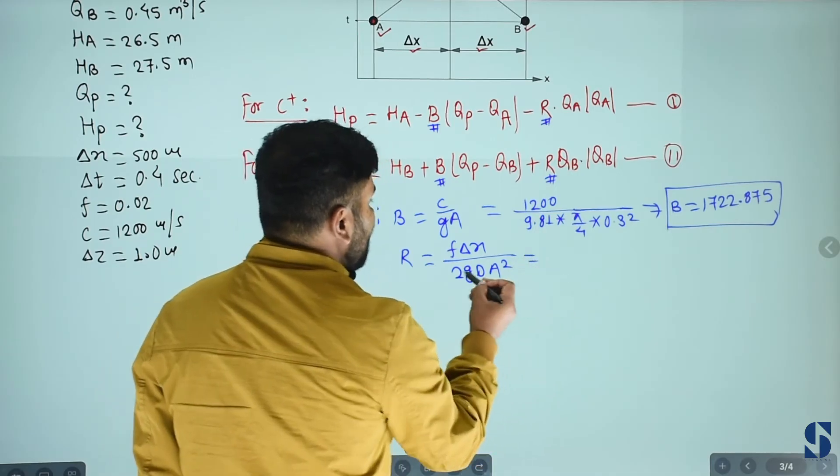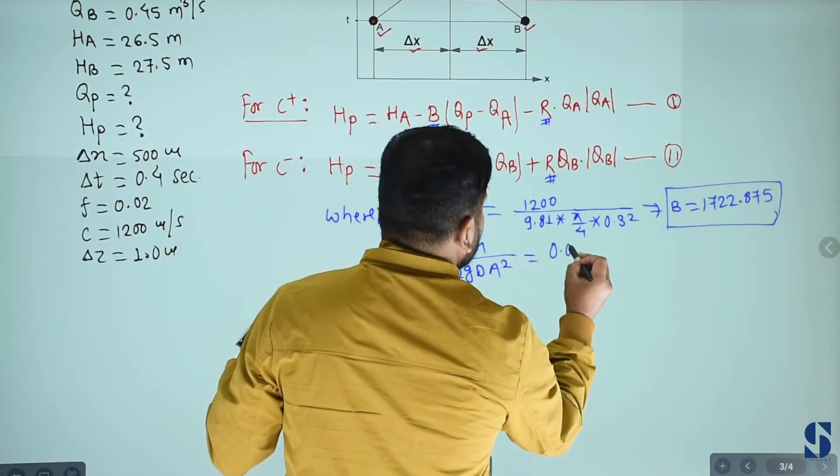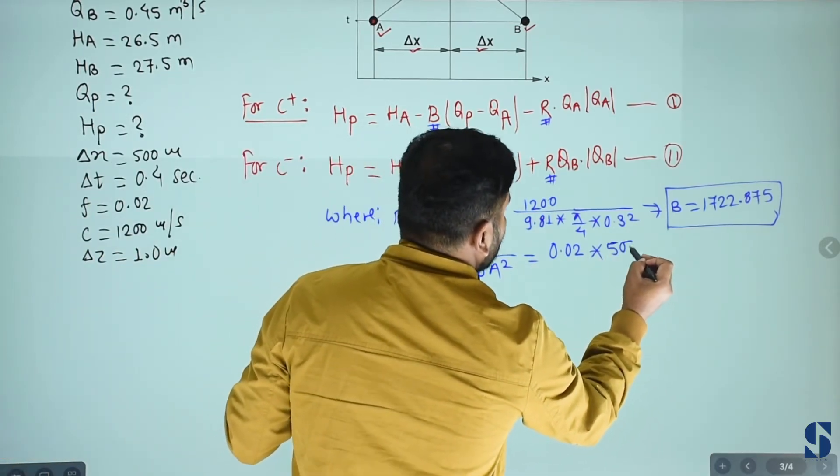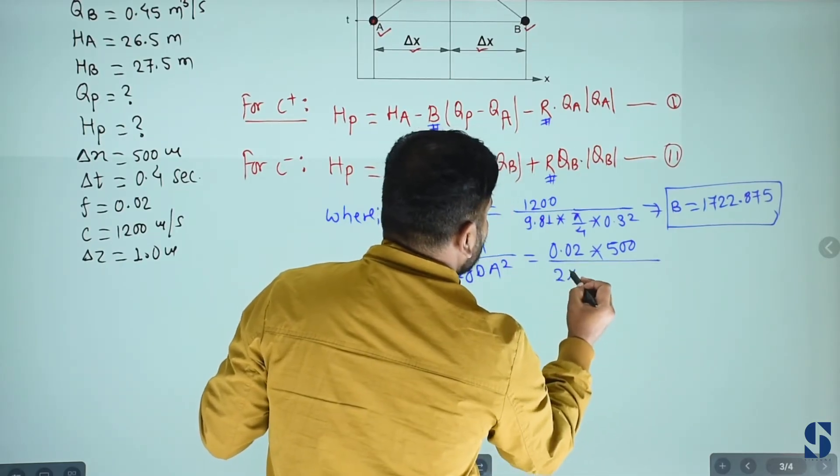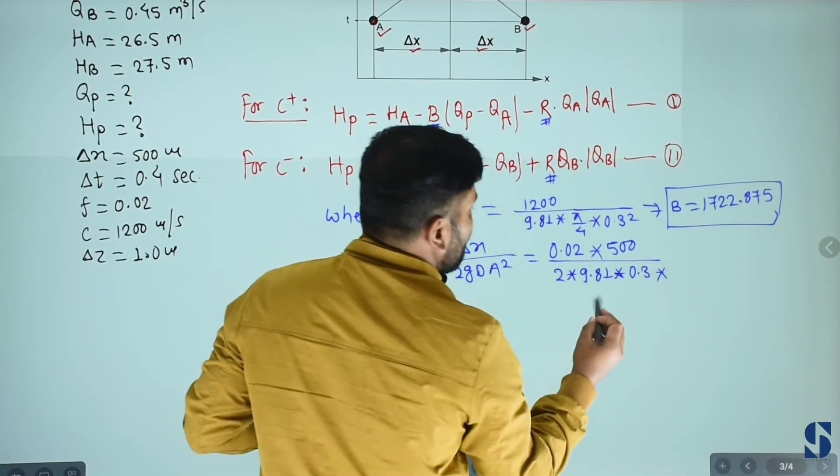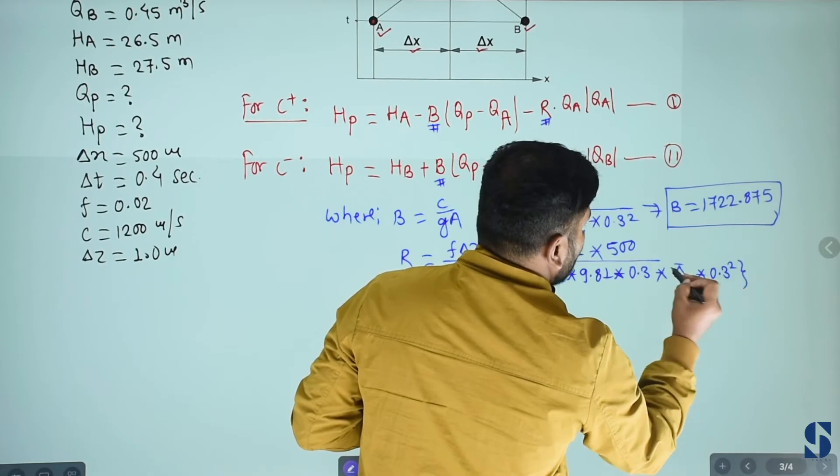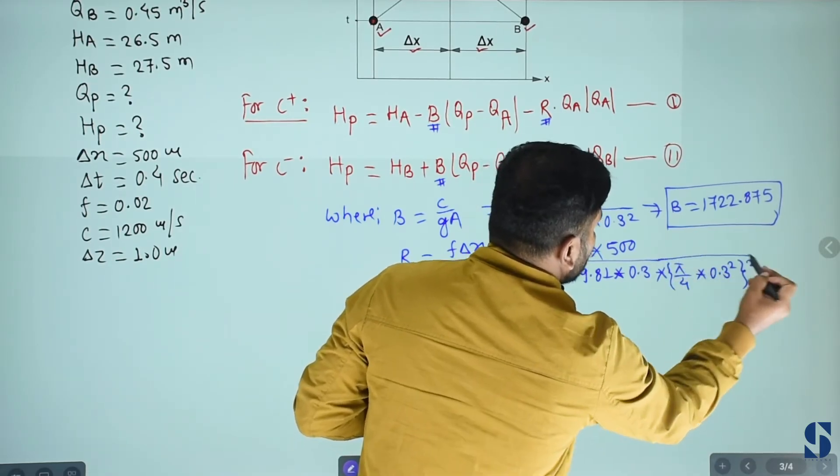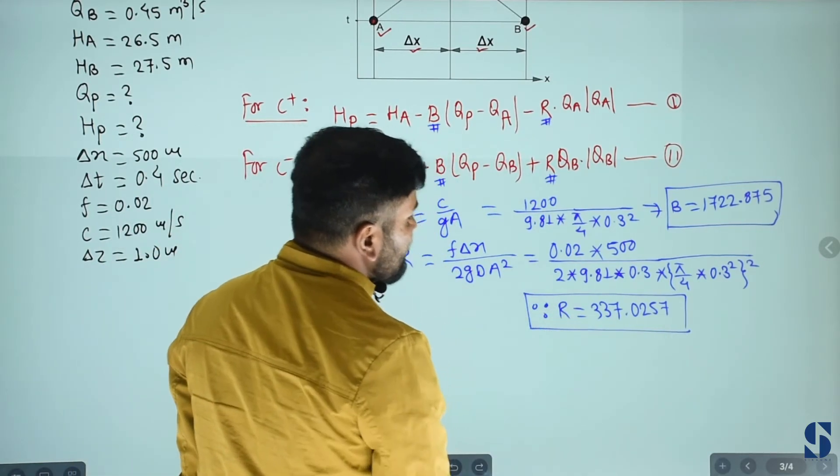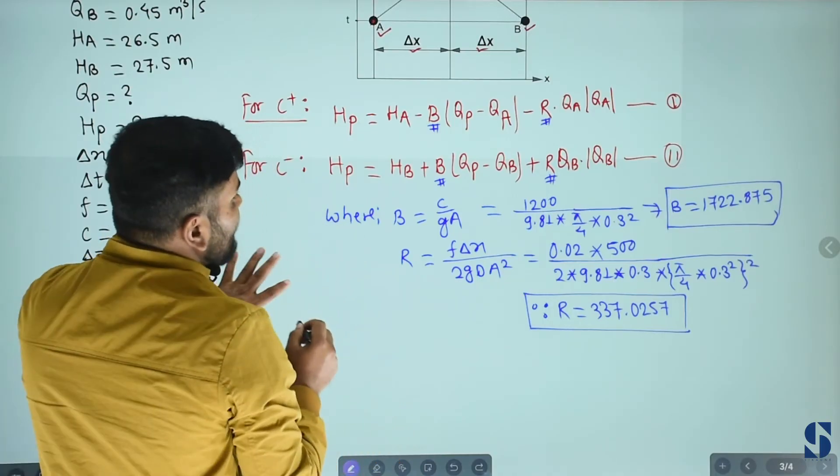R equals to delta x divided by 2 g A squared. Given f is 0.02, delta x equals to 500 meter, g is 9.81, diameter 0.3 squared. This is 5 by 4 into 0.3 square. The value calculates to 337.0257.